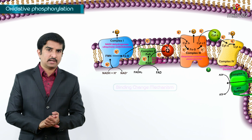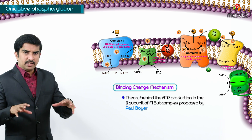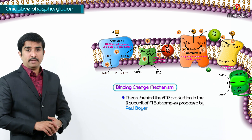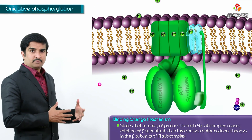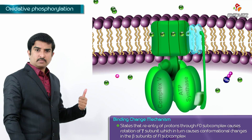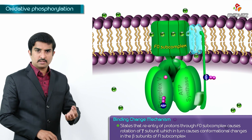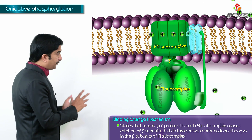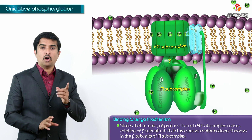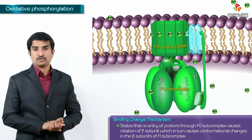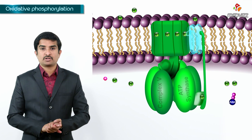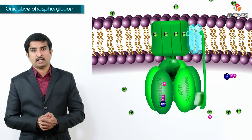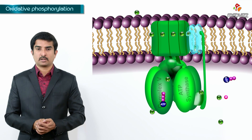Now let us discuss the binding change mechanism, proposed by Paul Boyer. This theory states that the re-entry of protons through the F0 sub-complex causes rotation of the gamma sub-unit of the F1 sub-complex, which in turn causes conformational changes in the beta sub-units of the F1 sub-complex. This is called the binding change mechanism. With this, we have completed a detailed discussion of oxidative phosphorylation, including how ATP synthesis takes place by means of a complex molecular motor.